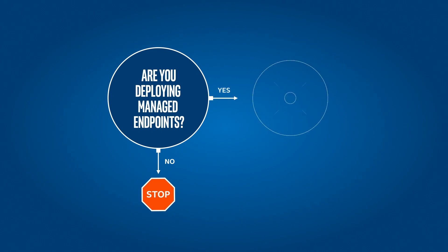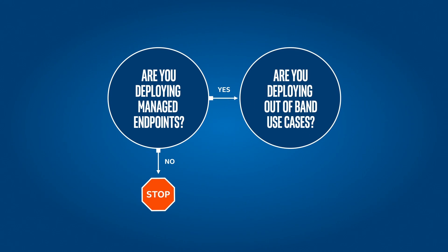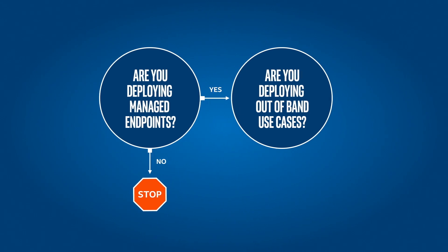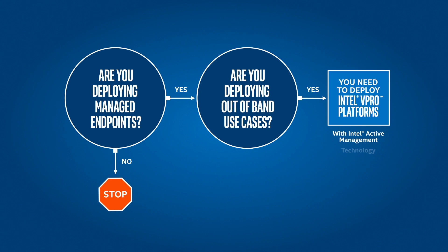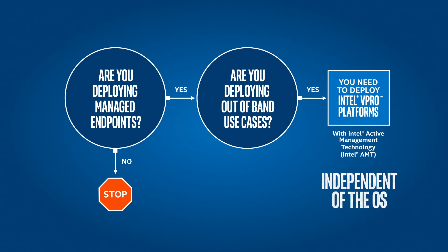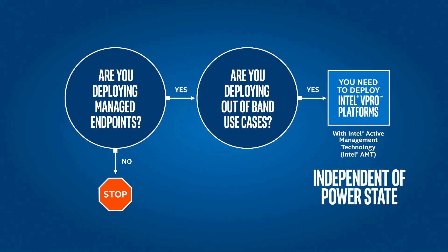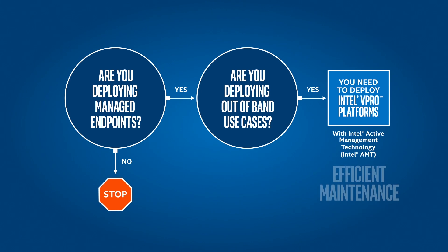The next question is: are you deploying out-of-band use cases? If your business wants to make systems more accessible for remote management, then vPro platforms with Intel Active Management Technology, also known as Intel AMT, may be the right solution. Intel AMT provides out-of-band remote management that is independent of the operating system and independent of power state, resulting in more efficient, proactive and reactive maintenance of endpoints.